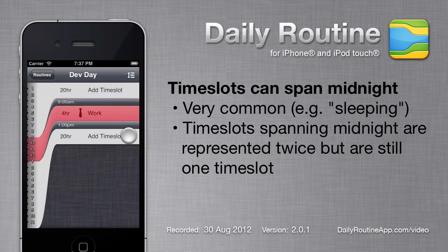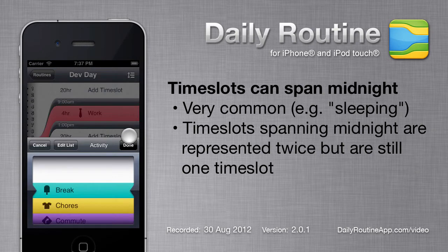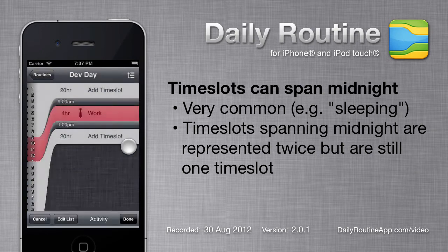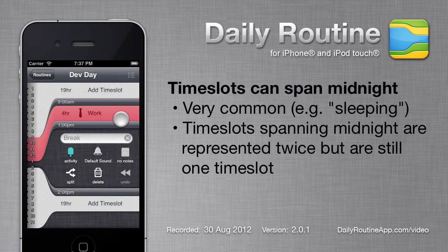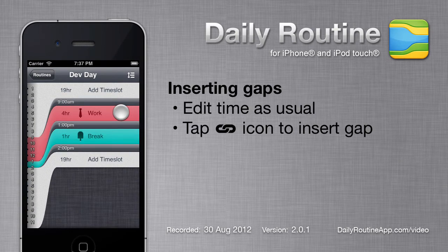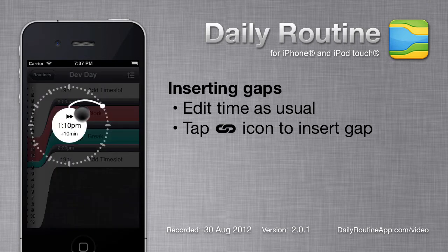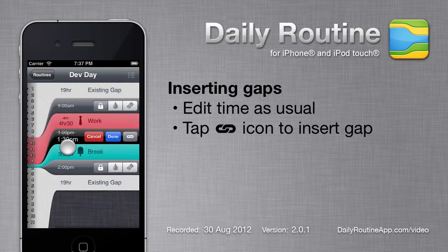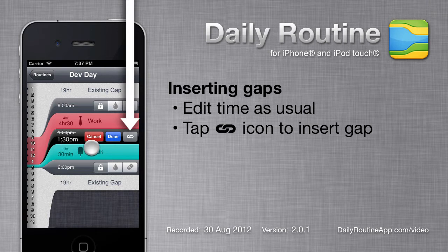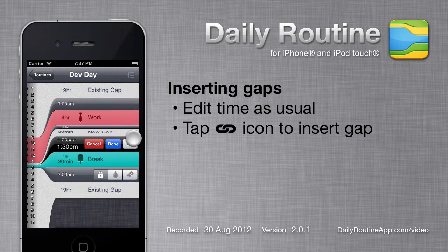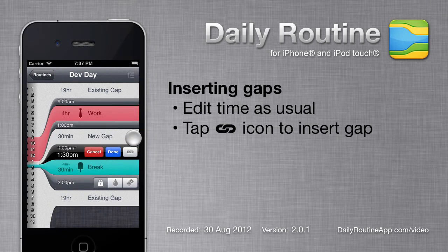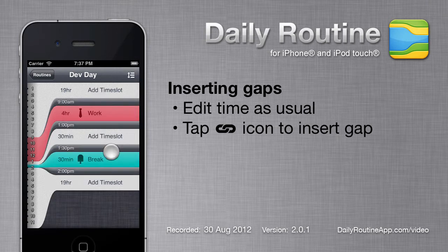When I add another timeslot, it is added right after the first timeslot. If we want a bit of a gap between them, we just edit the time as usual, then tap the Link button to unlink the two timeslots. Now when I tap Done, we can see that there's a gap.